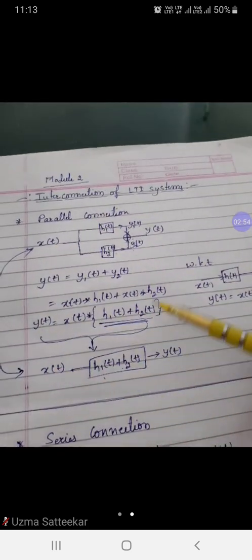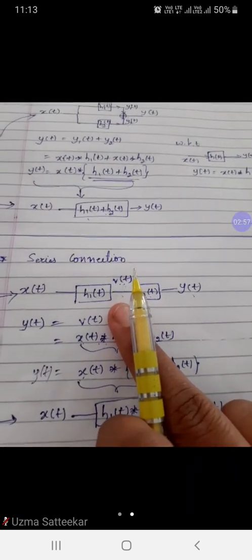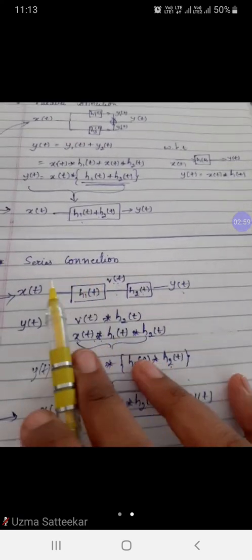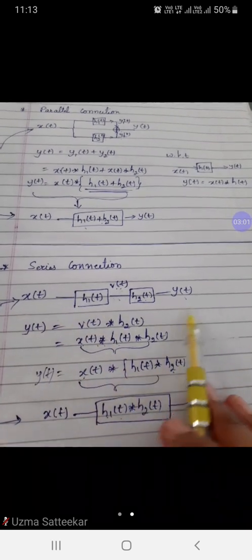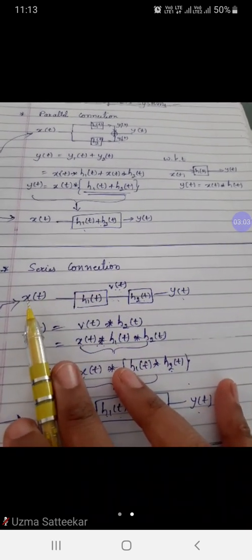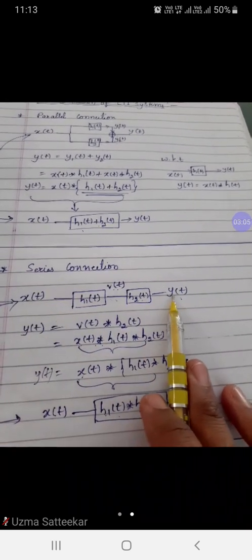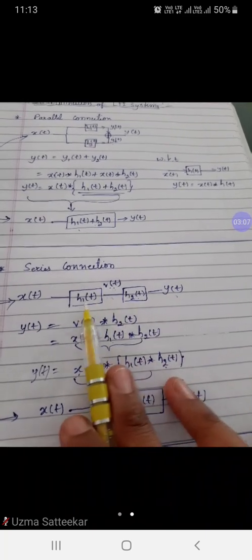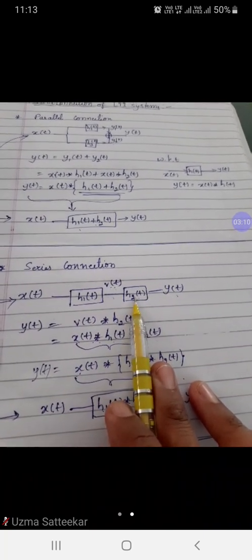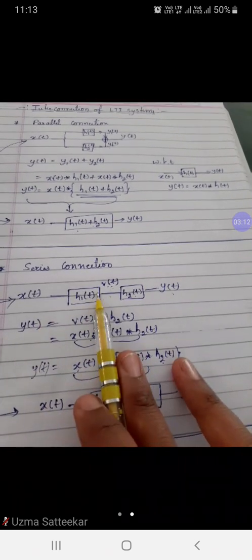This is about parallel connection. Similarly, when you look at the series connection, if you have a block diagram where x(t) is the input, y(t) is the output, and two impulse responses are connected in series, then how do we represent this block?